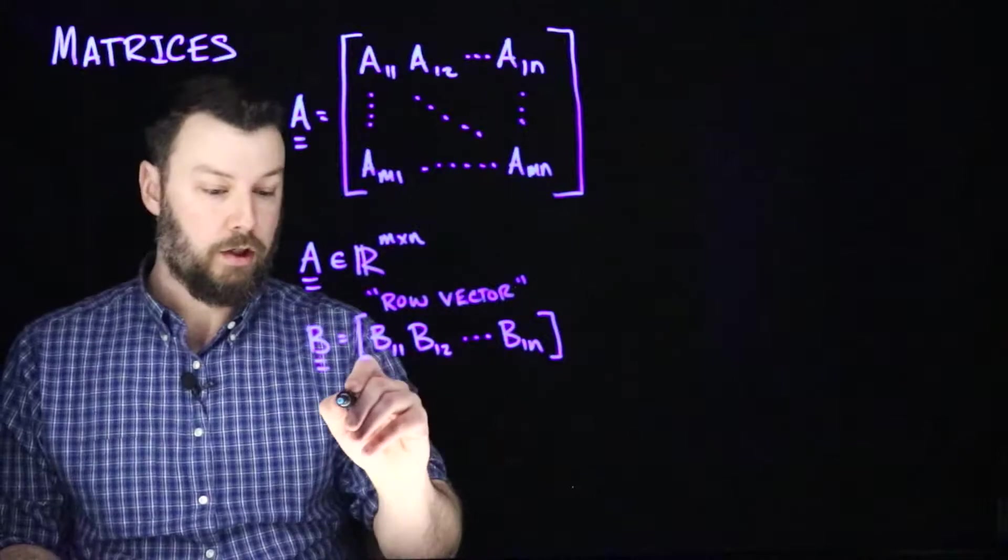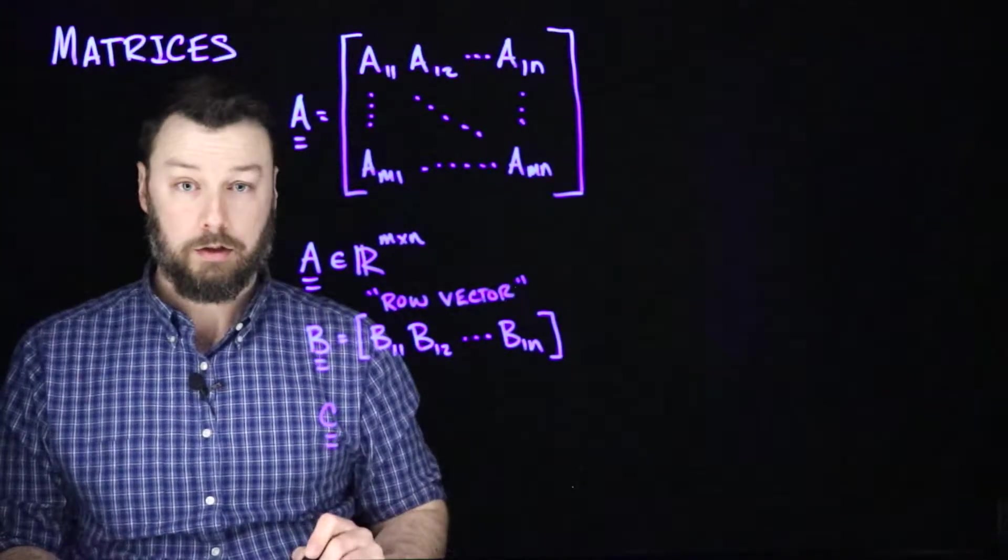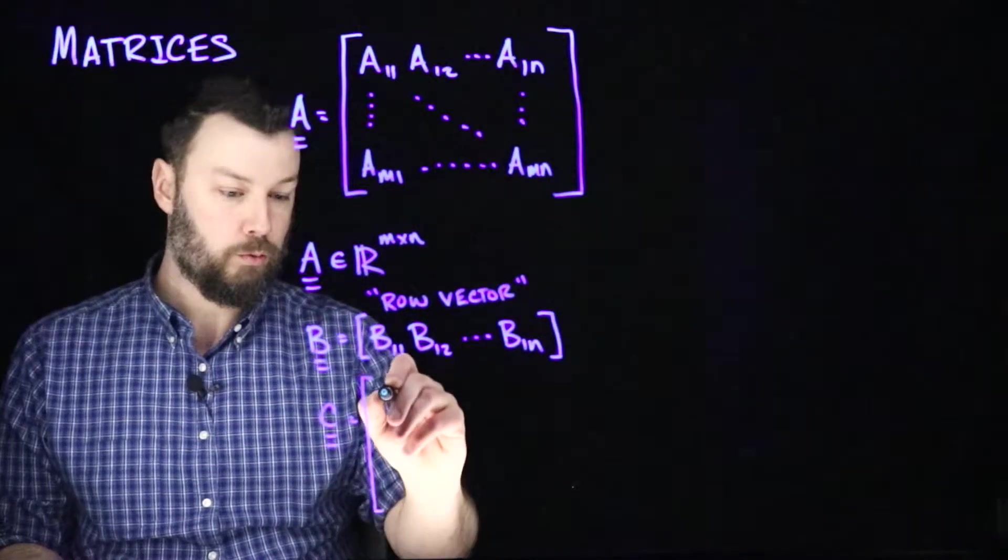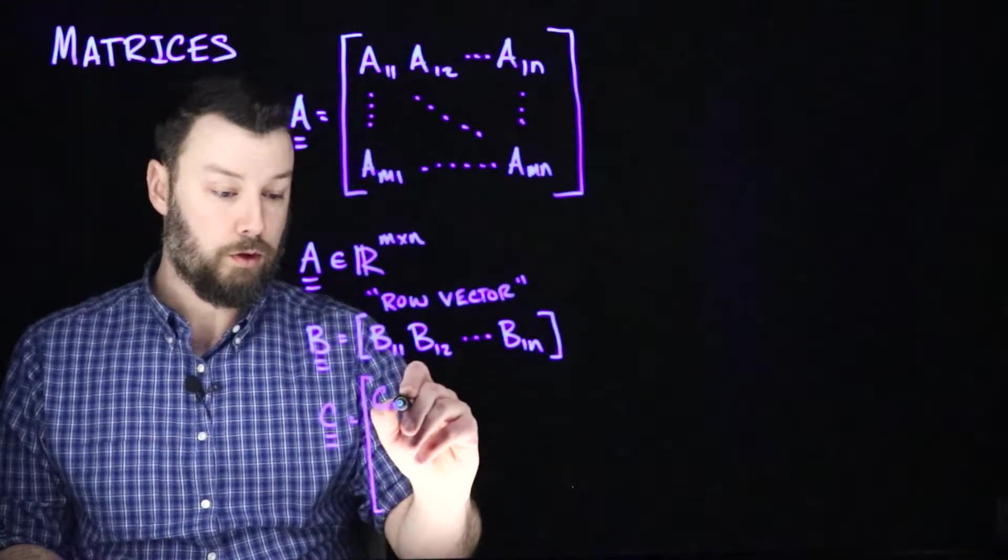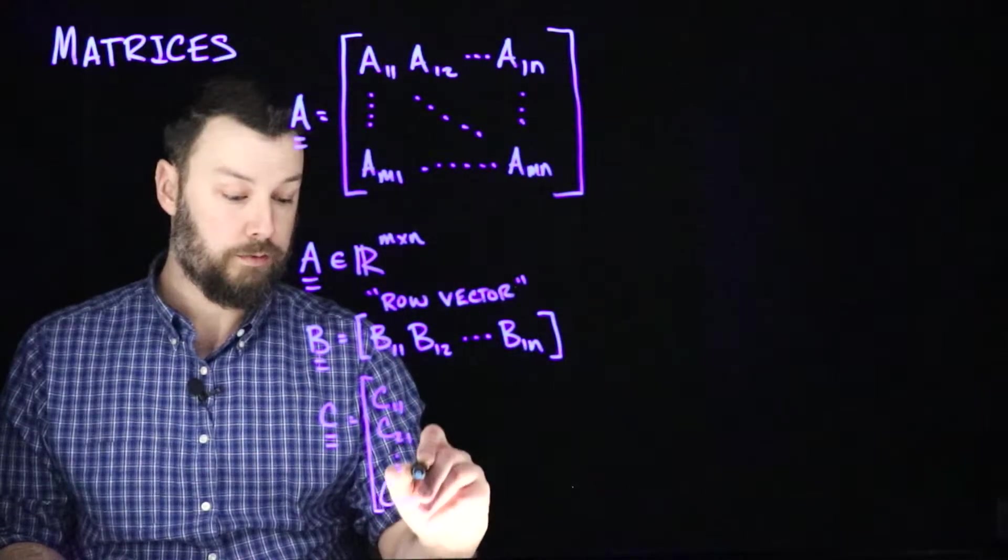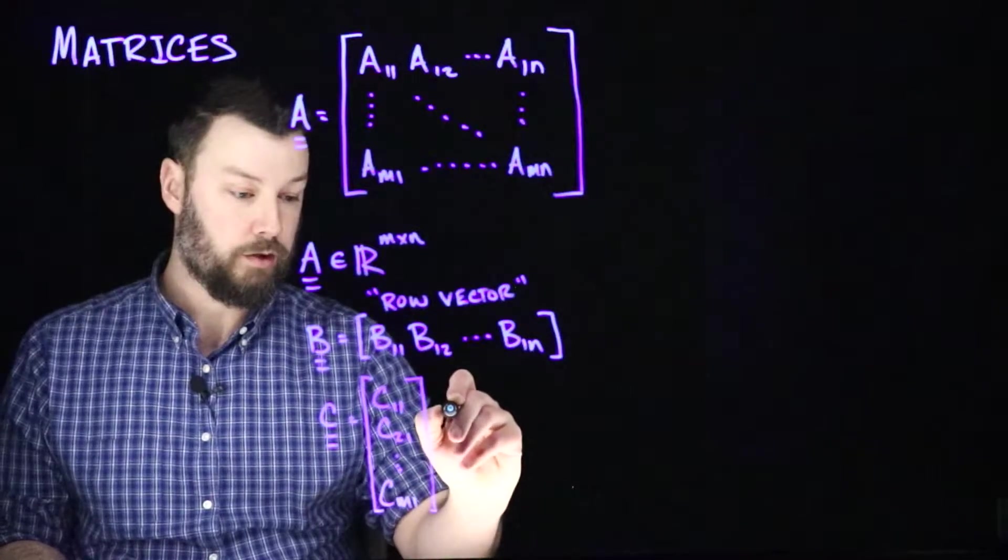Similarly, we might have something that only has one column, where maybe we have C11, C21, down to Cm1, and we might call this a column vector.